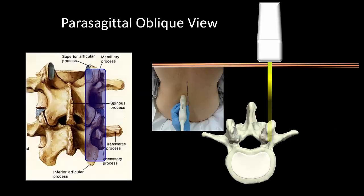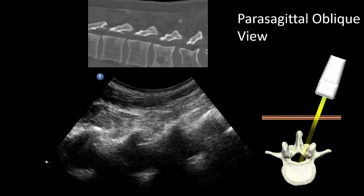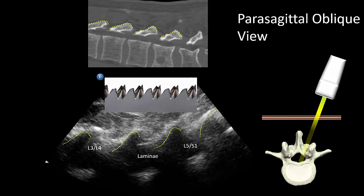As with all patients, we start with a parasagittal oblique view. The probe is placed in a longitudinal orientation and angled towards the midline to direct the beam through the interlaminar windows. What you expect to see are these characteristic sawtooth-like shadows which are the laminae of the lumbar vertebrae. Adjust the probe with small sliding and tilting motions to visualize the anterior complex, which is located about two centimeters deep to the base of the sawtooth or lamina in most adult patients.